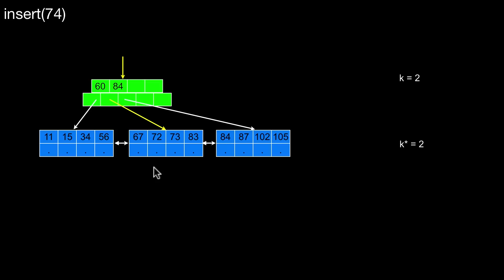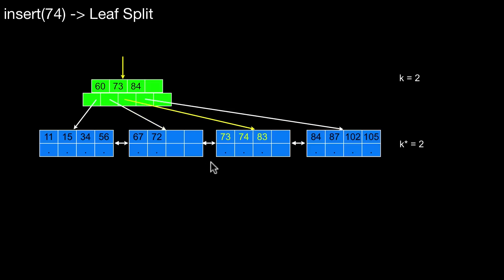In this situation we create a new leaf, basically at this point here in between those two leaves — a new leaf is created. This operation is called the split operation. Here we have this new leaf, inserted into the doubly linked list here on the leaf level.